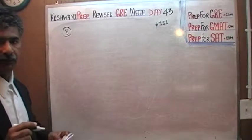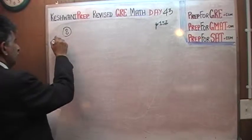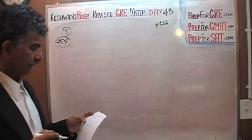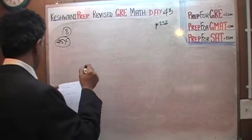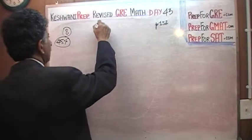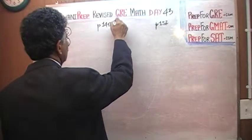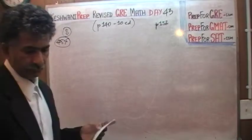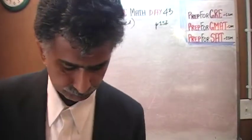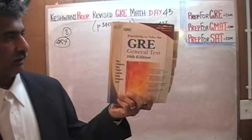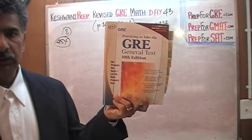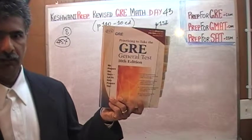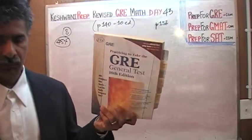This problem, when it appeared in the real exam, more than half the people had trouble with it. Only 45% of people got it right. It is the same problem that you will also find on page 140 of the 10th edition, based on the old GRE. They have repeated some questions from this book into the new book.